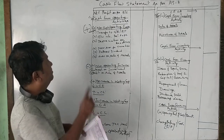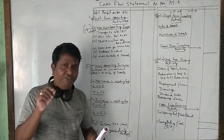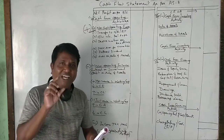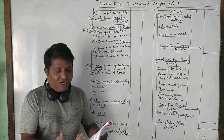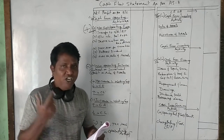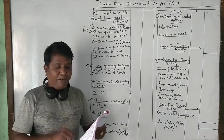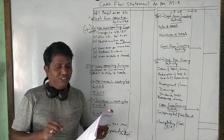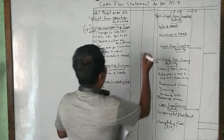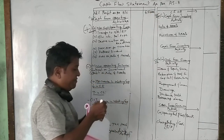First, we need net profit. He has not given a profit and loss account in the balance sheet — you don't find it on the liability side or the asset side. But it is given in the adjustment: the last paragraph states the net profit for the year 2003 amounted to rupees 45,000. So definitely that net profit of 45,000 rupees we should take here. So 45,000 we have taken.